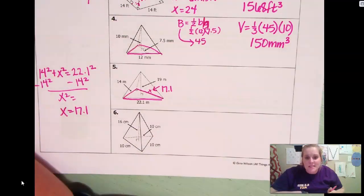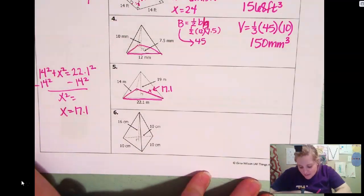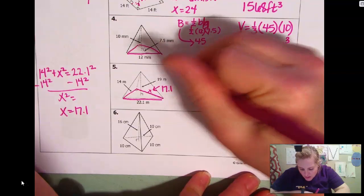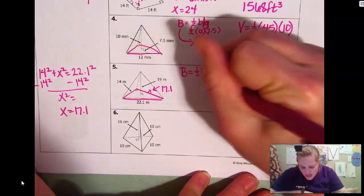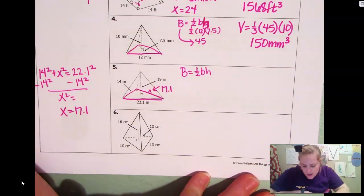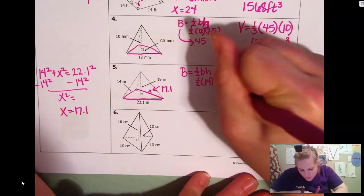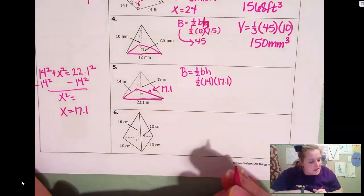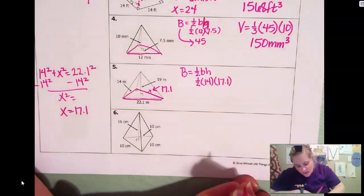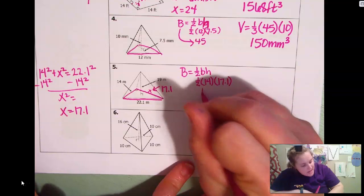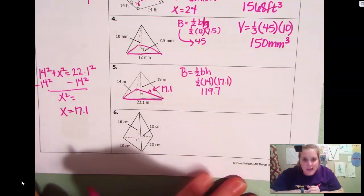That's going to be the base and height of your base. Okay. To find big B, we're looking for one half the base and height of your face triangle. So one half 14, the height would be 17.1 because again, those are your legs. So together, that's going to be 119.7. That is your big B.